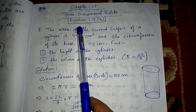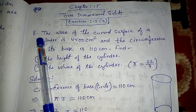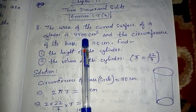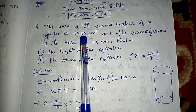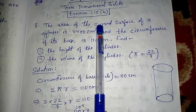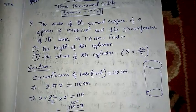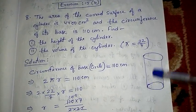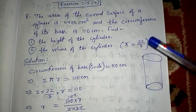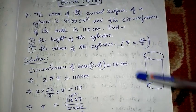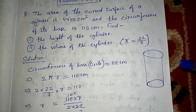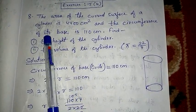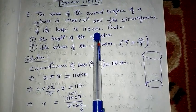Let me start with exercise 15B, question number 8. The area of the curved surface of a cylinder is 4400 centimeter square. As I said yesterday, curved surface area means both the ends are open — it is not covered, just like a pipe. Only the wall portion, the boundary or surrounded portion — its area is 4400 centimeter square, and the circumference of its base is 110 centimeter.